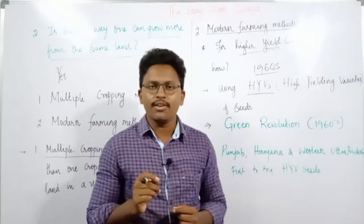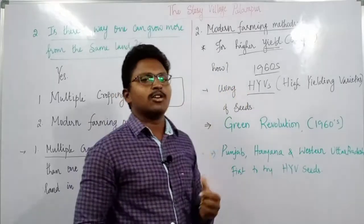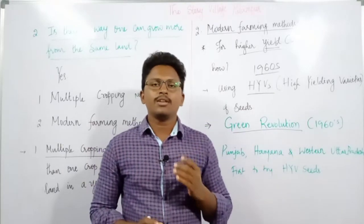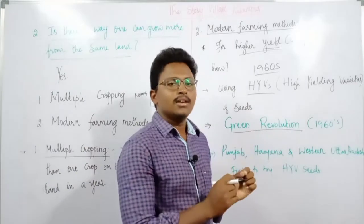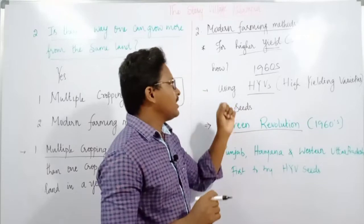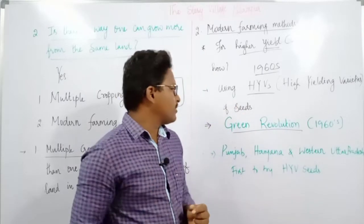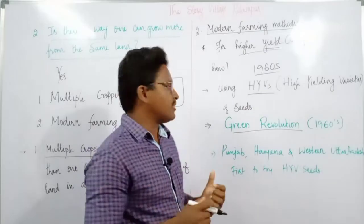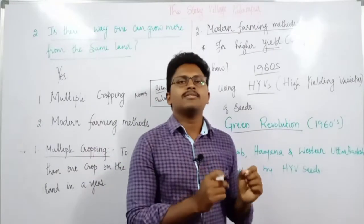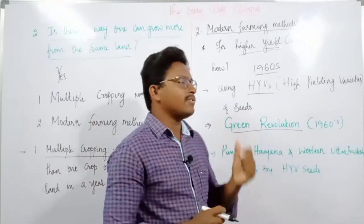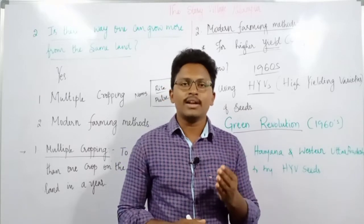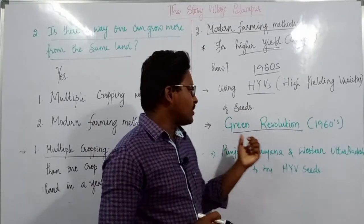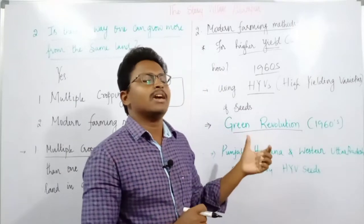HYV seeds can actually improve production. These seeds were brought in during the Green Revolution in the 1960s, which was introduced in northern India — the father of the Green Revolution brought a new variety of seeds, namely HYV seeds, which can improve output significantly. The states that initially followed the Green Revolution were Punjab, Haryana, and western Uttar Pradesh. These HYV seeds require plenty of water as well as more fertilizers and pesticides, and they were mainly implemented in those states.